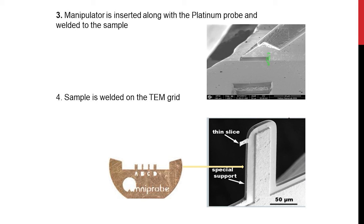The zoomed in image of one slot is given here. Once the thin slice is lifted off, we weld it on the grid. After welding, the thickness will be in the order of 1 micron, so we need to reduce the thickness to less than 100 nanometers with the help of the ion beam. Once you make the thin slice less than 100 nanometers, the same grid is taken for TEM analysis. This in-situ deposition, milling, and lift-off procedure is termed TEM lamella preparation.